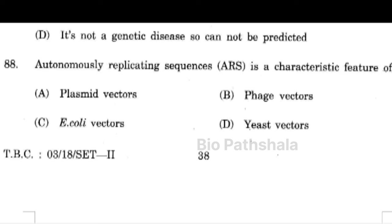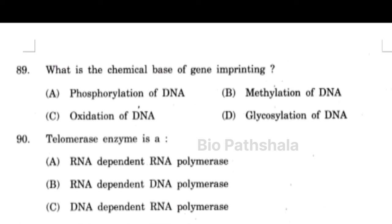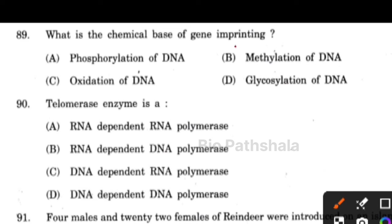Next question: what is the chemical basis of gene imprinting? That is methylation of DNA. Next question: telomerase enzyme is an RNA-dependent DNA polymerase.